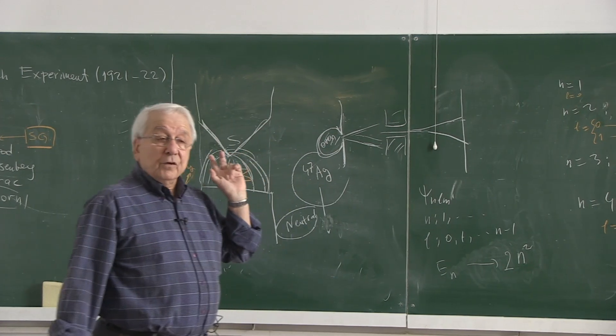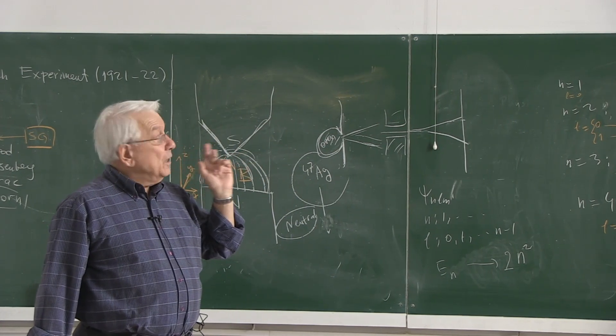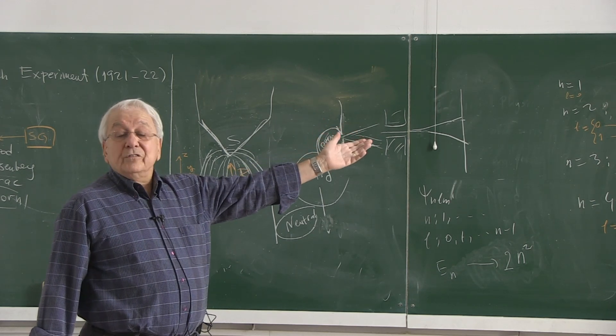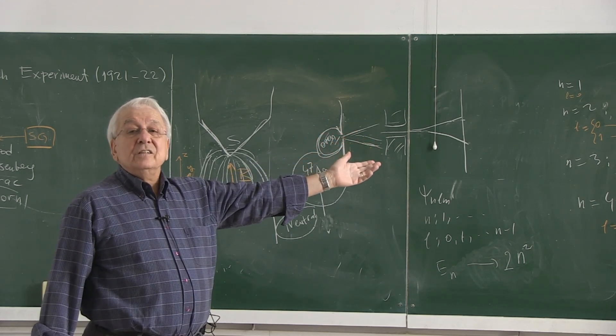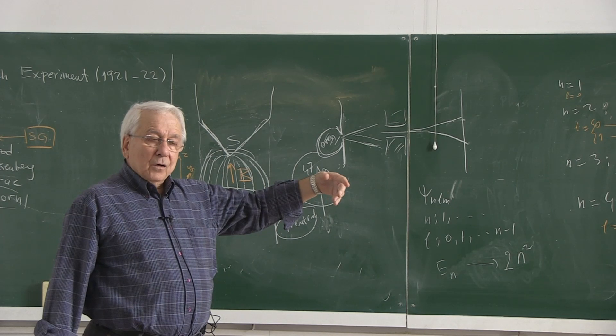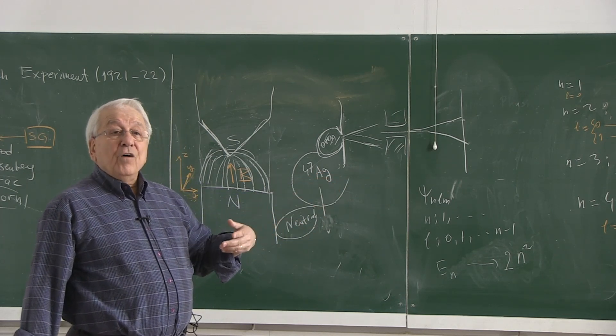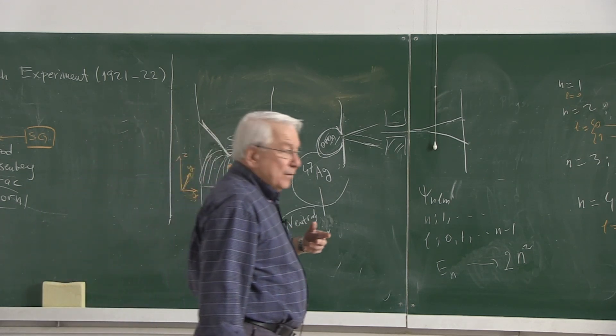These gentlemen were obviously very bright people. They used silver which is, if there is 47 protons in the nucleus, there is at least that much neutrons. So this is a very heavy object, 2 times 10 to the 5 times as massive as the electron itself.